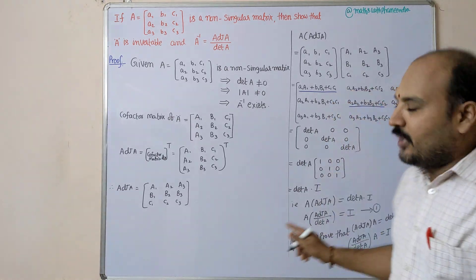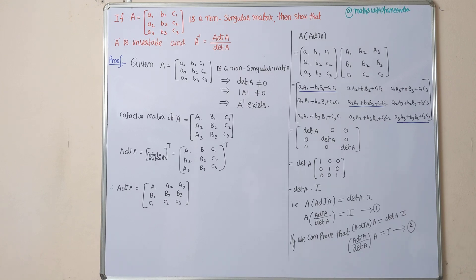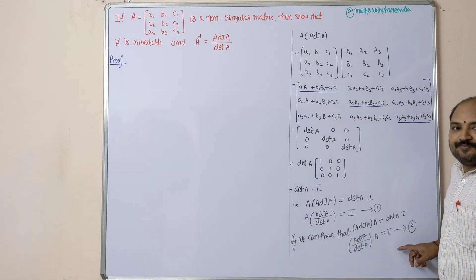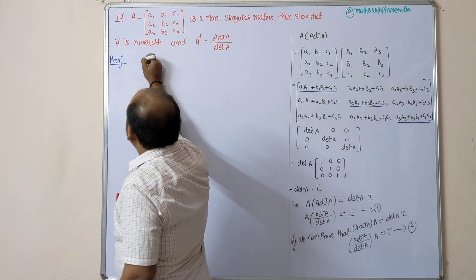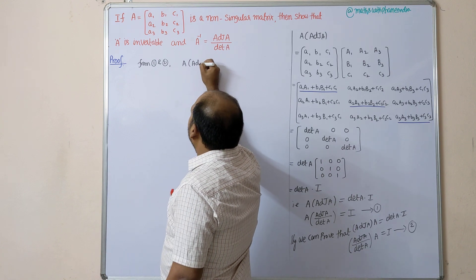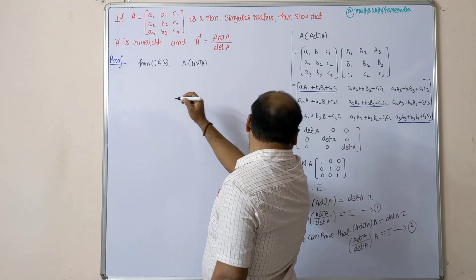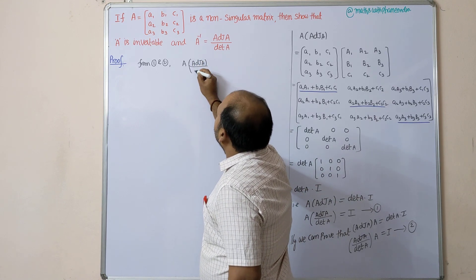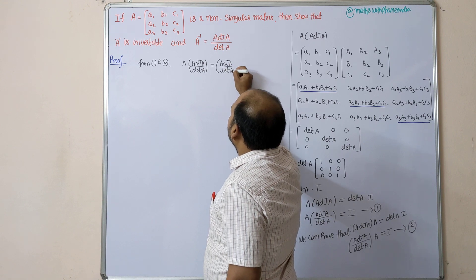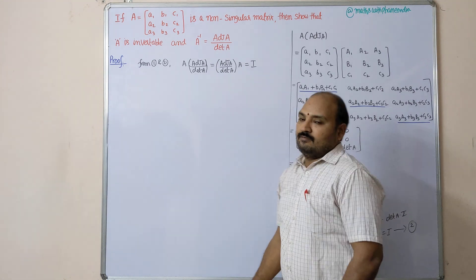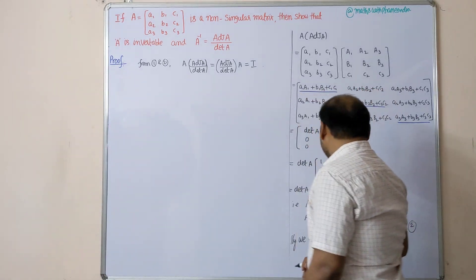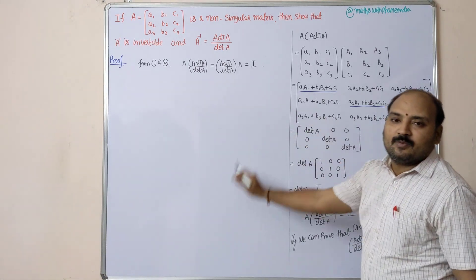From equations 1 and 2, we conclude that A × (adjoint A / det A) equals (adjoint A / det A) × A equals I. For this step you get three marks, and for the remaining procedure, two more marks.